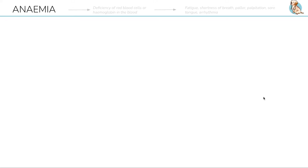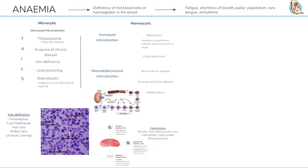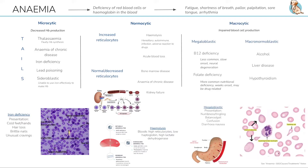Today I'll be talking about anemia. Anemias are often broken down by the size of the red blood cell or the MCV. We'll be working through microcytic, normocytic, and macrocytic anemia and the key points you need to understand for each.